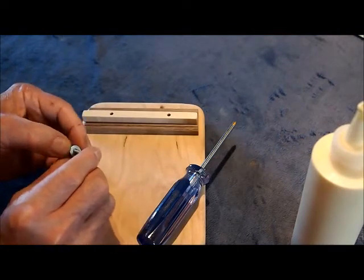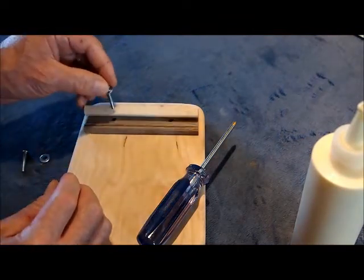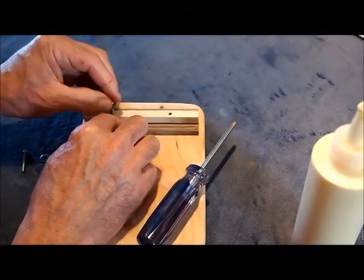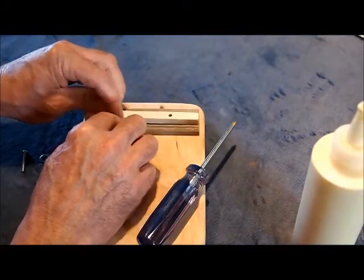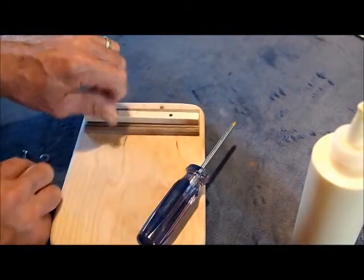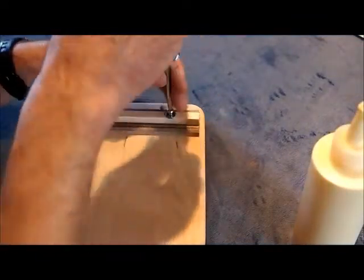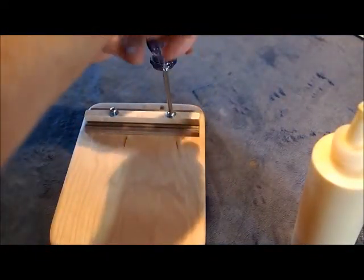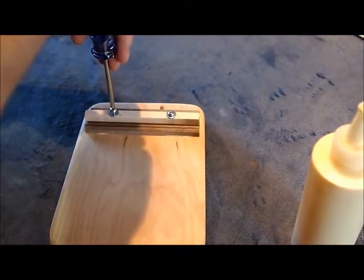Put the washer on the screw, and drop it through, and screw it in, and we just tighten the two screws down, and that's your clamp.